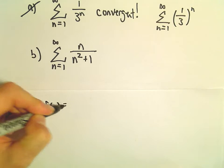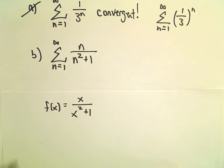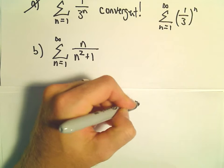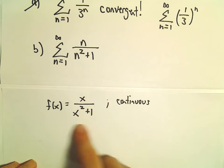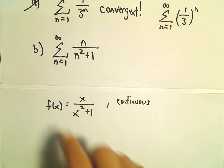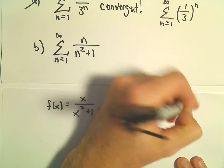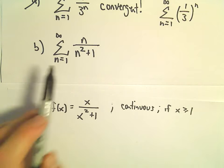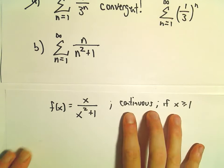If we think about the function f of x equals x over x squared plus 1, this is definitely a continuous function. It's a rational function, and there's nothing that makes the denominator undefined. So this is continuous for all values of x. In particular, it's continuous if x is greater than or equal to 1. So recall, we're starting at 1, our index.